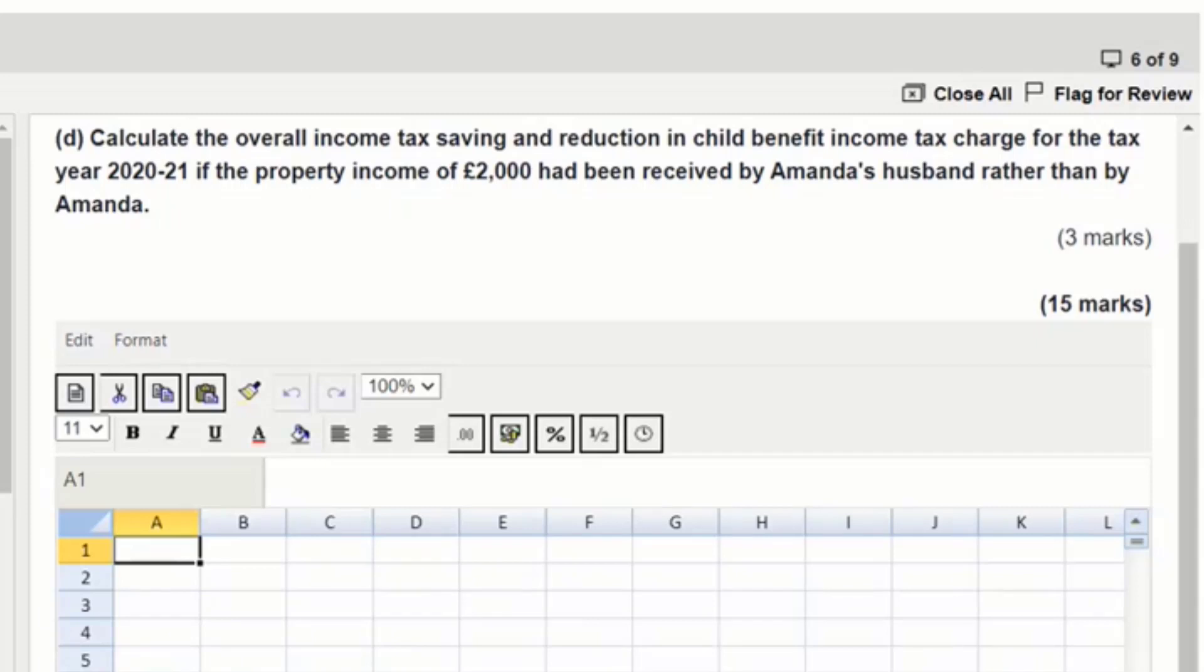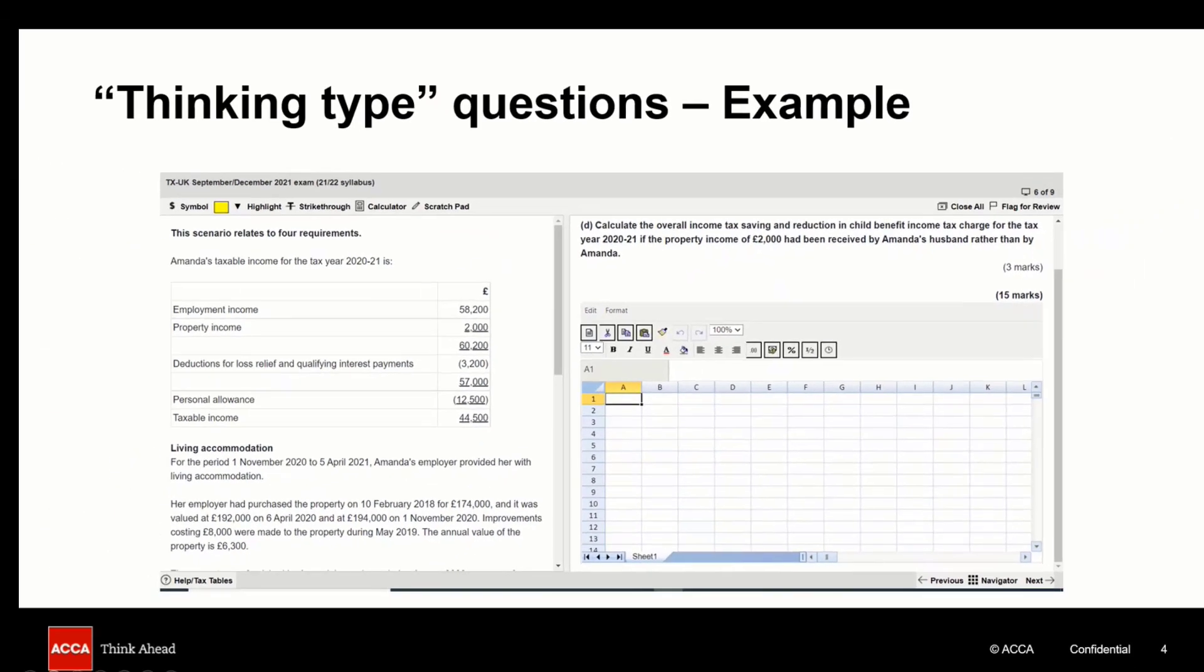Now this question was designed to get you thinking and when faced with such a question you should bear in mind the mark allocation only three marks here. In part C calculations of Amanda's income tax liability and child benefit tax charge should have already been prepared. Of course one approach could be to fully rework these calculations without the £2000 of property income and compare this with the original tax liability and child benefit income tax charge and then calculate the extra tax Amanda's husband would have to pay.